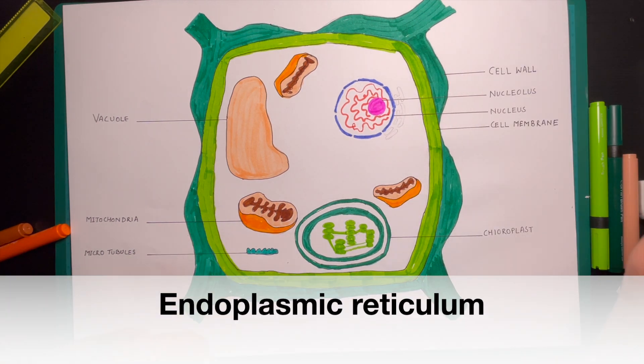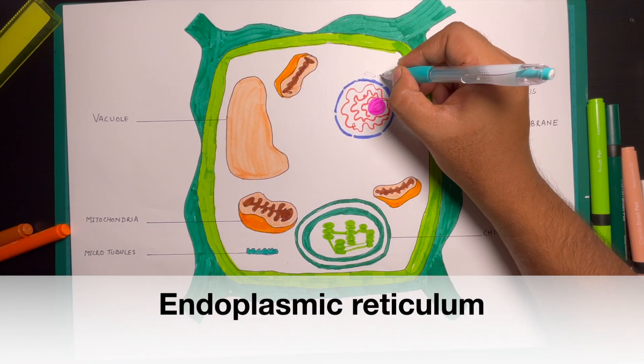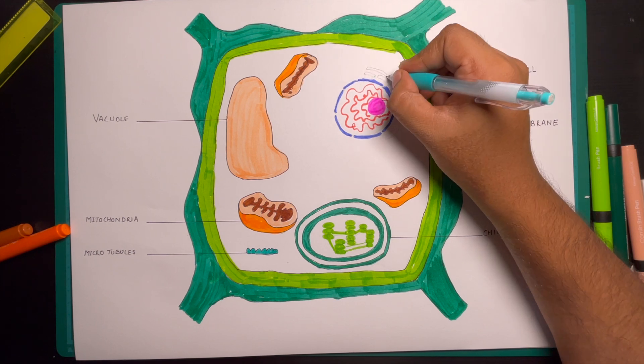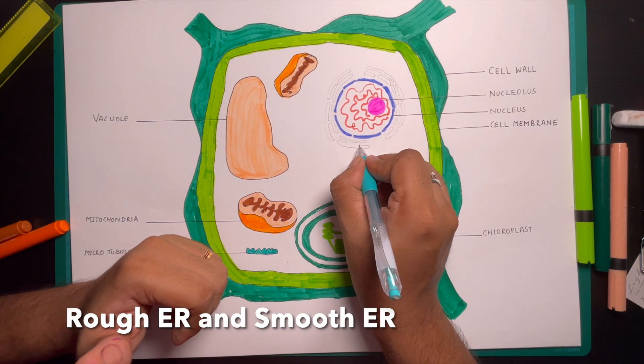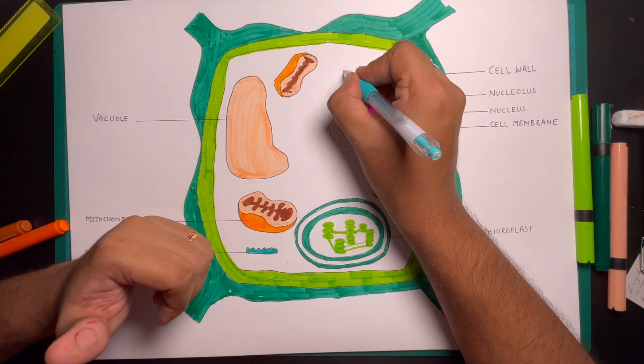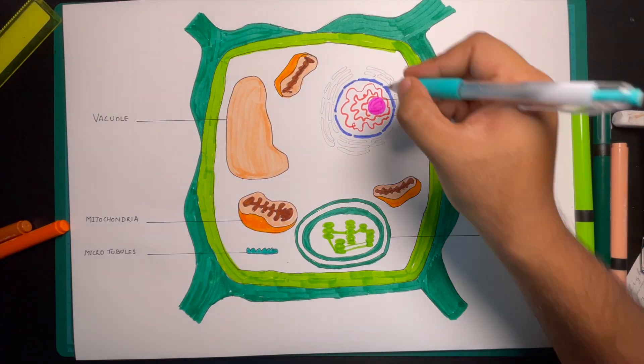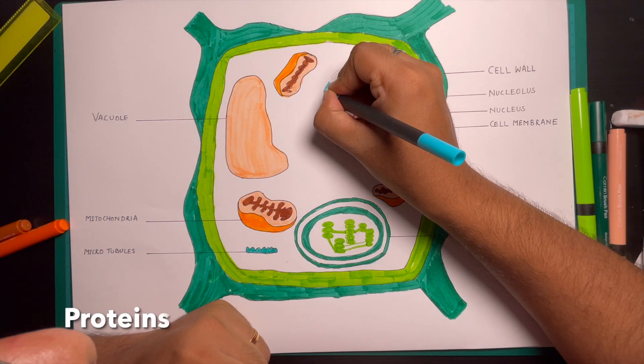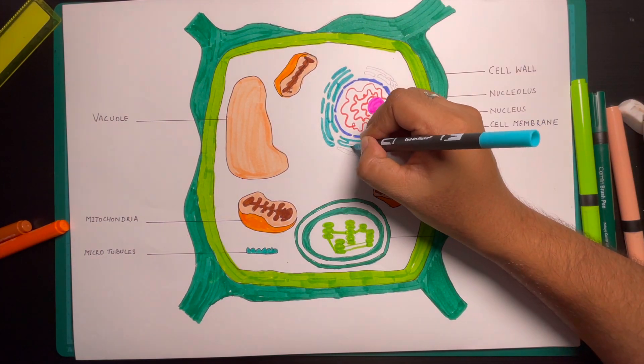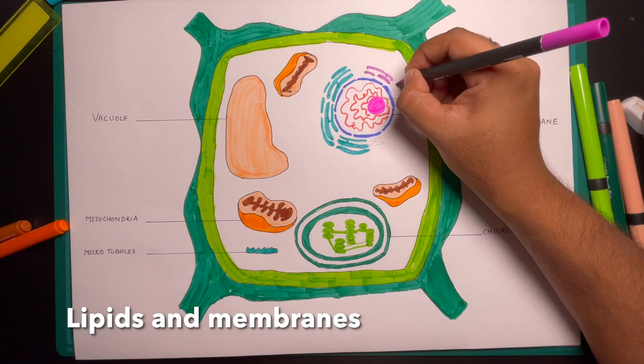Endoplasmic reticulum are cylindrical branched cellular organelles with single membrane. It is of two types: rough endoplasmic reticulum and smooth endoplasmic reticulum. The main functions are to produce different types of cellular organelles. Rough endoplasmic reticulum transports proteins while smooth endoplasmic reticulum produces lipid and membrane.